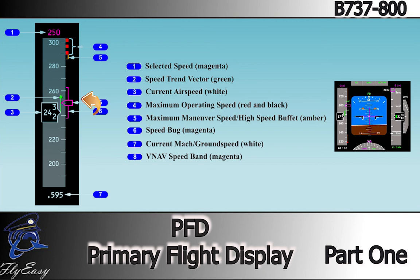When the target speed is off-scale, the bug is parked at the top or bottom of the tape with only half of the bug visible. Depending on the AFDS mode, this target value is derived either from the MCP speed or from the FMS. An airspeed trend vector indicates predicted airspeed in 10 seconds. The aircraft accelerating situation shows a dynamic vector that changes length during acceleration and deceleration. At a constant airspeed, the vector is not displayed.